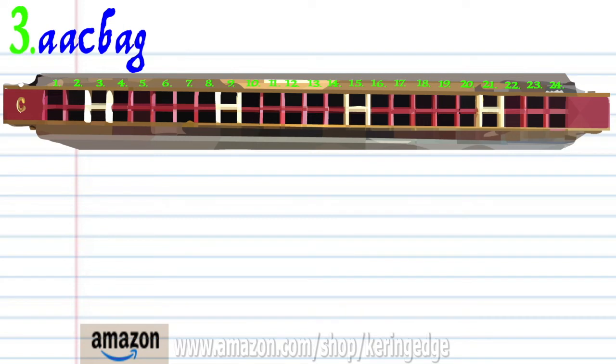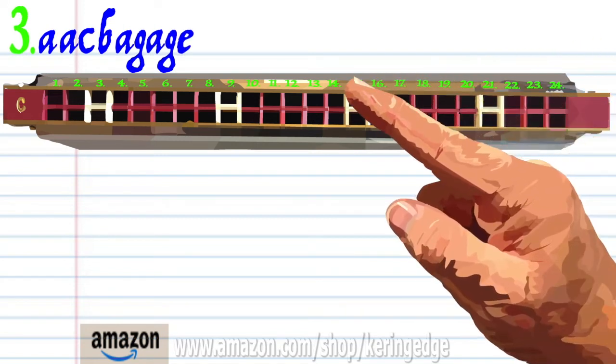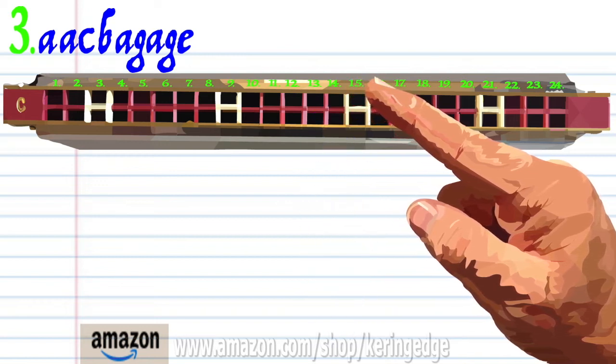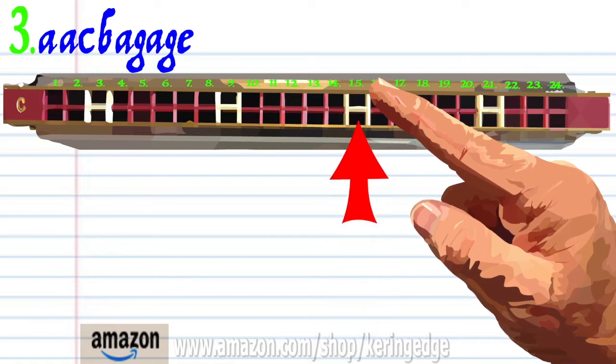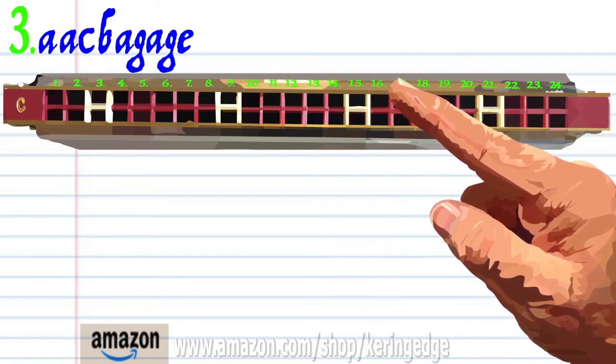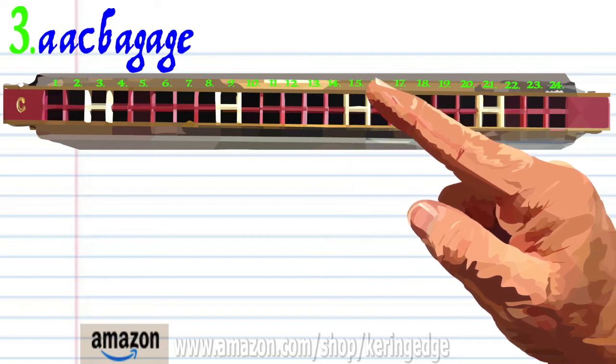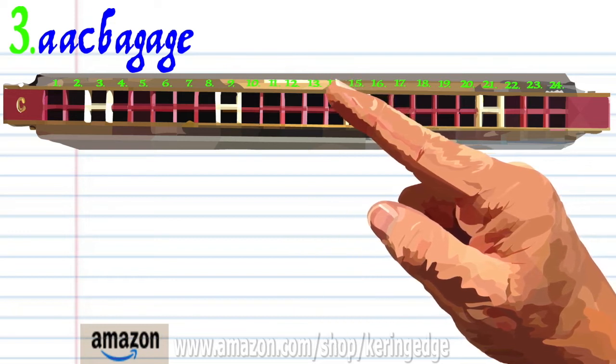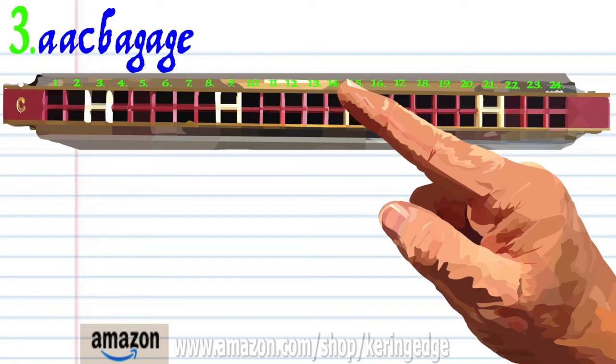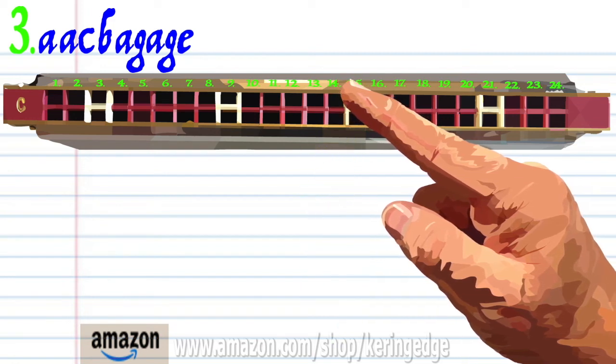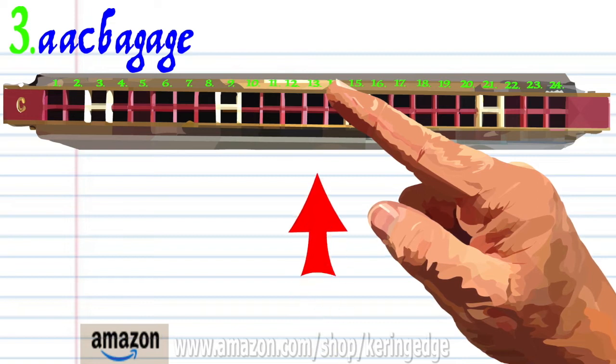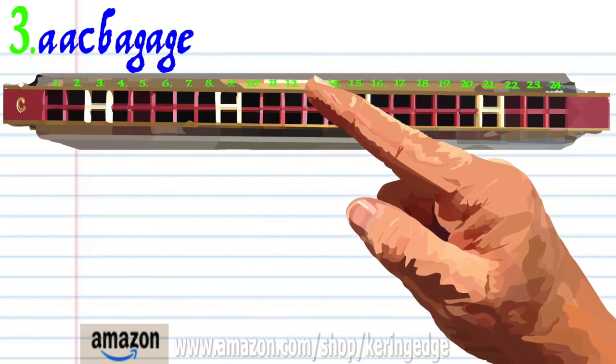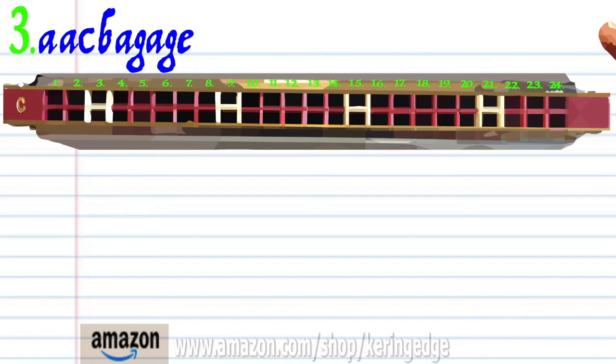For phrase three, breathe in through fourteen twice. Blow into fifteen. Breathe in through sixteen. Breathe in through fourteen. Blow into thirteen. Breathe in through fourteen. Blow into thirteen. And blow into eleven. And practice this until you end up with something that sounds like this.